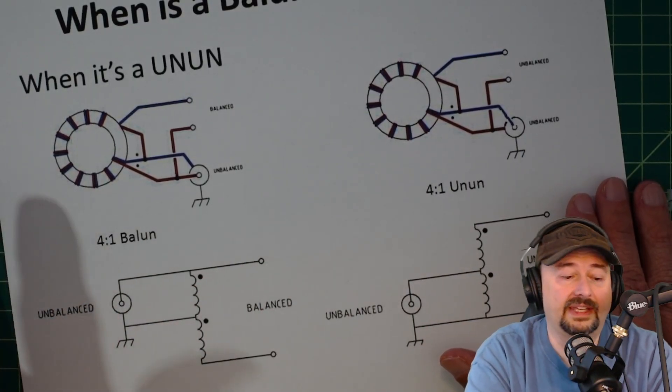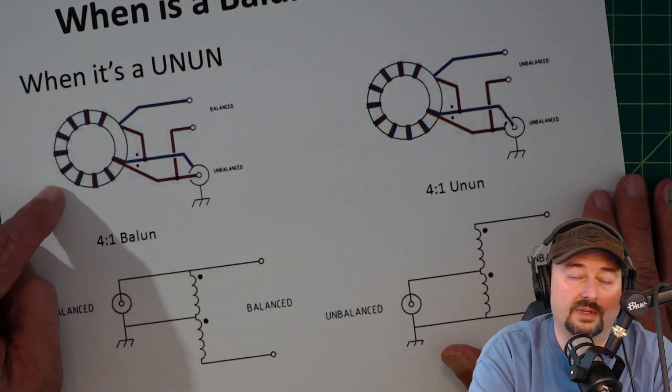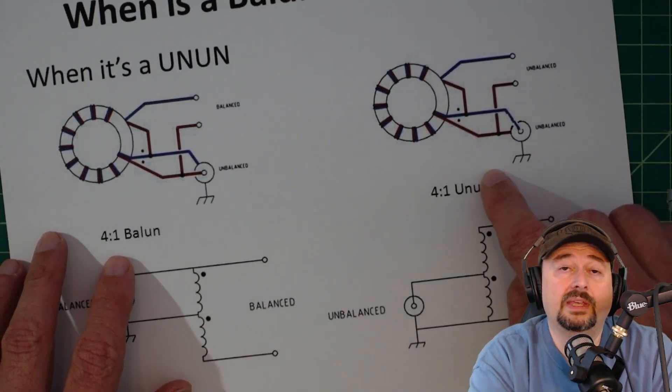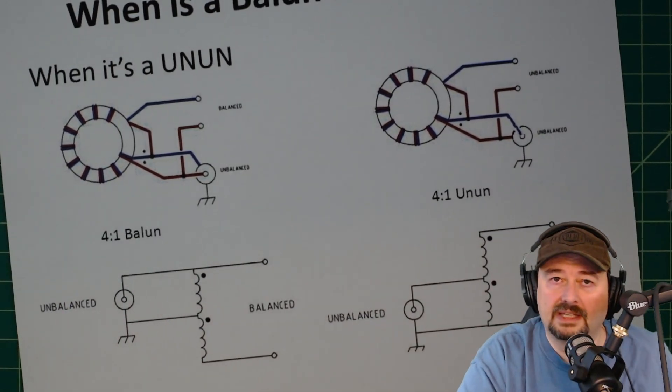If you connect your NFED antenna or your vertical to a balun, it's not going to perform as well as it would if you connected it to an unun. The reason is all about the grounding. Hopefully that makes sense.